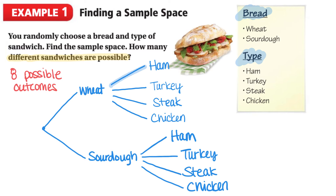We can have wheat ham, wheat turkey, wheat steak, wheat chicken, sourdough ham, sourdough turkey, sourdough steak, and sourdough chicken.